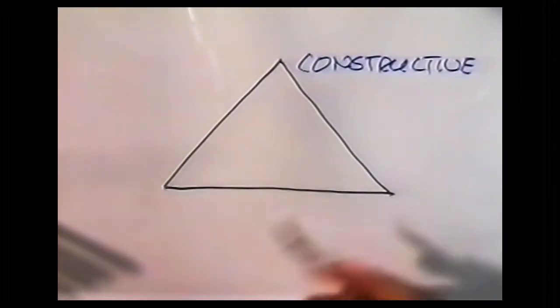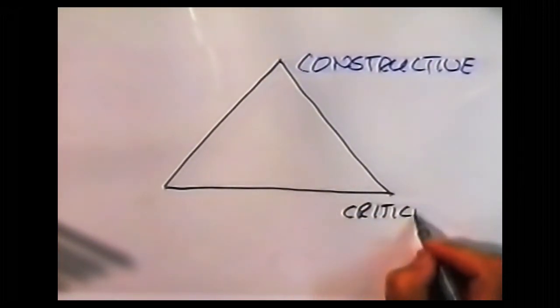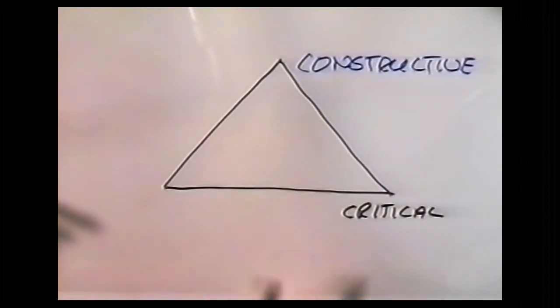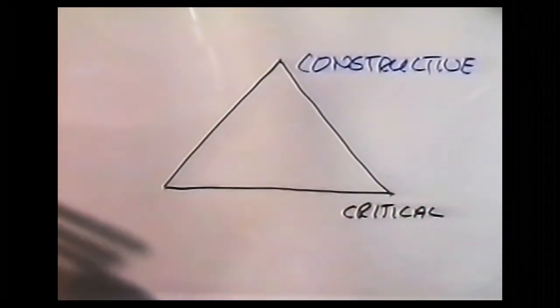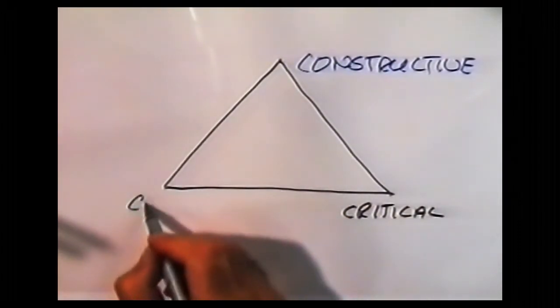Bottom angle we have critical thinking. The use of judgment stops us doing things which are bad, illegal, polluting, don't work, unfair, and so on. Then at this base we have creative thinking.